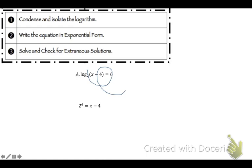So let's change forms. That's the same thing as 2 to the 6th power equals x minus 4. 2 to the 6th power, 64 equals x minus 4. So x equals 68. Still check it. Make sure you get a positive. We do, so we're good.